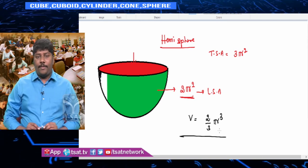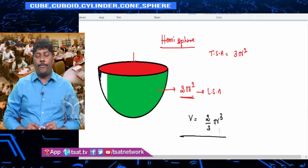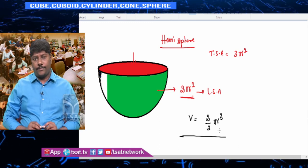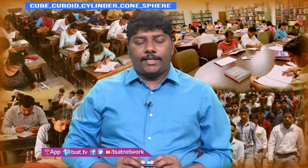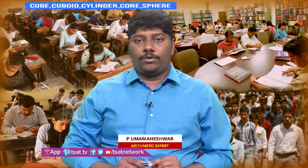In exams, questions may ask: if you melt 10 hemispheres to form one full sphere, everything changes — lateral surface area, total surface area, radius — except one thing: volume remains the same. When one figure is converted to another by melting, simply equate the volumes of both figures to find unknown values.